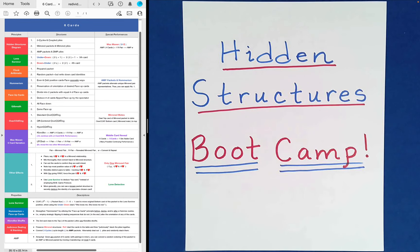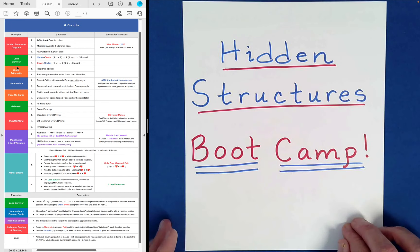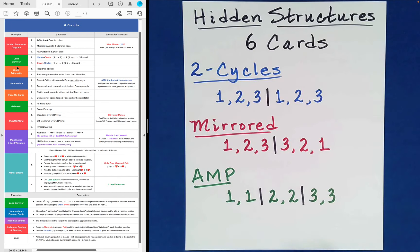Welcome back to the hidden structures boot camp series. In this video we're going to look at six card packets - packets of only six cards. So because we're back to even size packets, many of these important mathematical principles listed on the left will apply. Let's take a look at what happens in the realm of hidden structures when we have six cards.